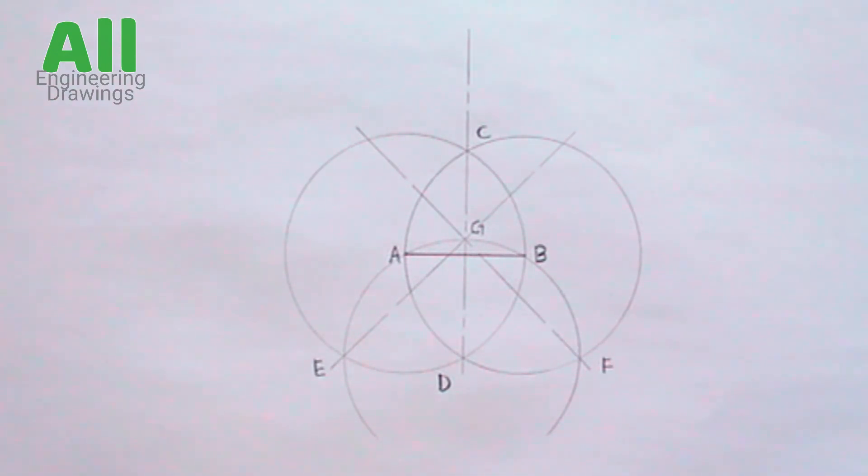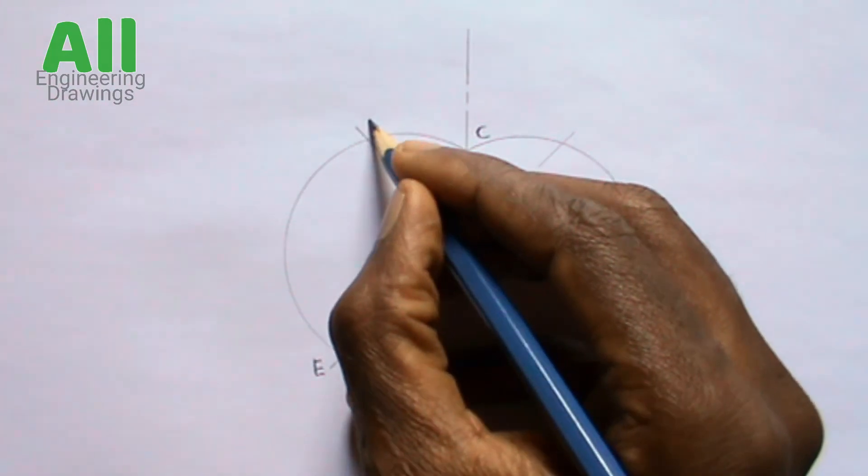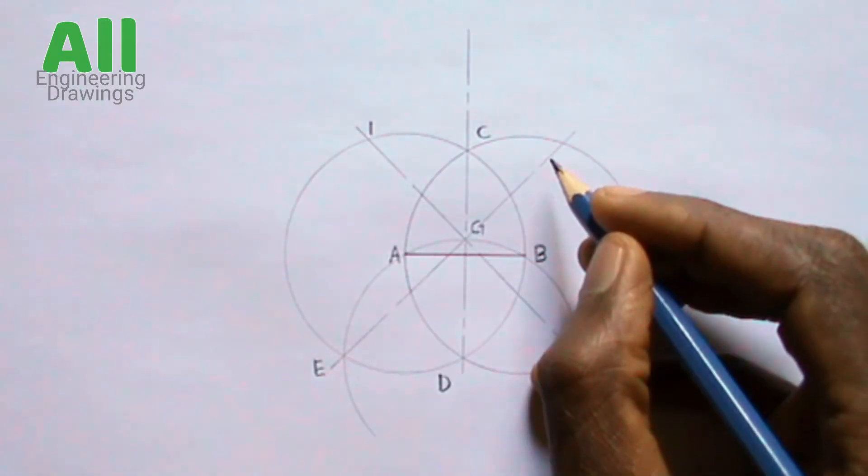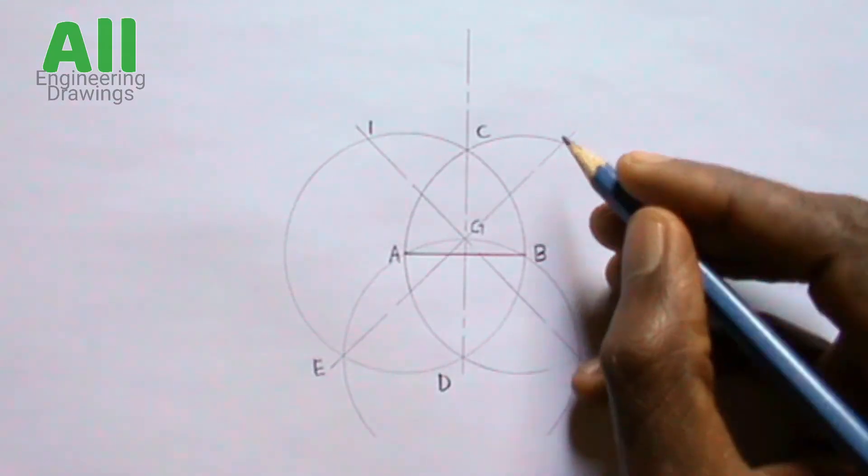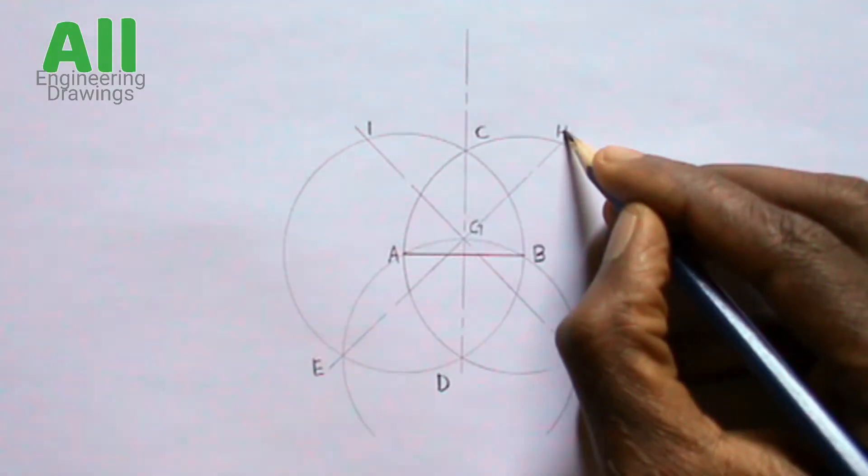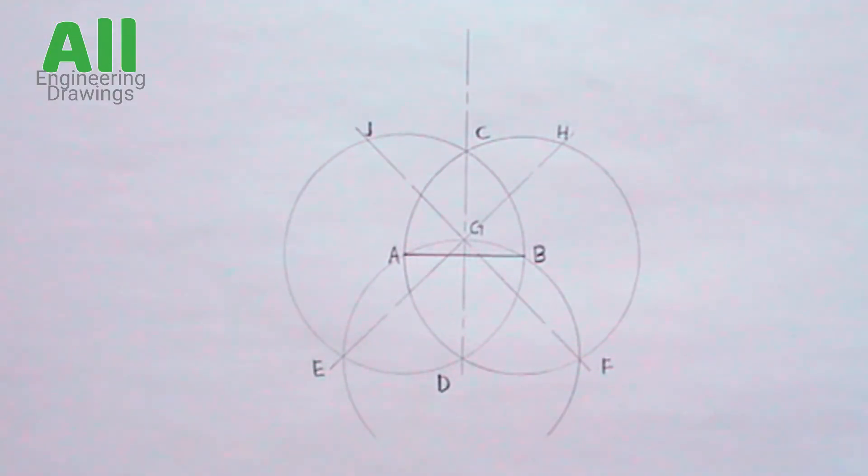Label the points where the lines you just drew intersect the circle. Now using the same radius as line AB, place your compass on point H.